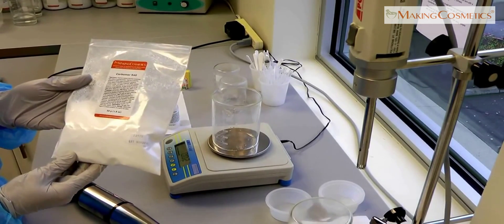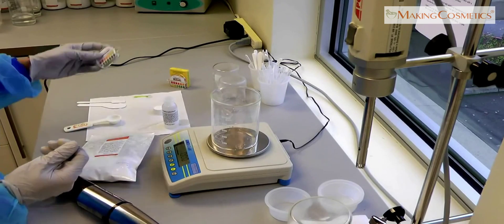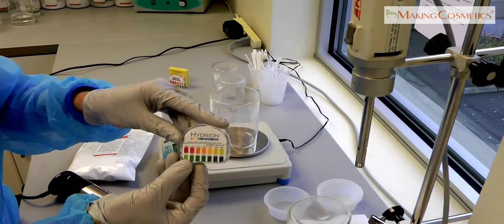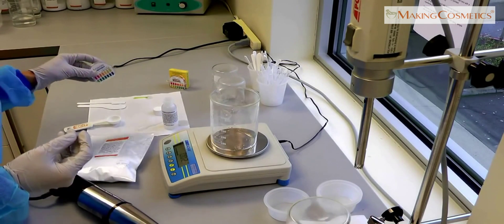Carbomer will thicken when the pH is around neutral. A neutral pH is 7, the dark green color. Not much carbomer is needed to make a thick gel.